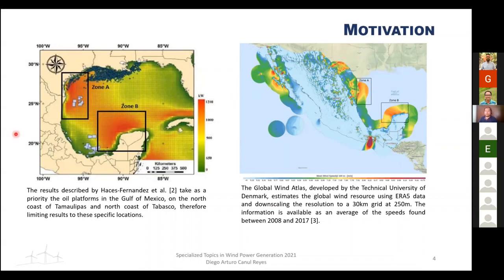However, there are limitations with these works. The first, by Aceves Fernandez, shows potential zones but does not delimit them. The second, the Global Wind Atlas, is only an average of seven to nine years. It uses ERA5, downscaled from 30 kilometers to 250 meters, and shows two potential zones: one to the north and one at the north of the Yucatan Peninsula.